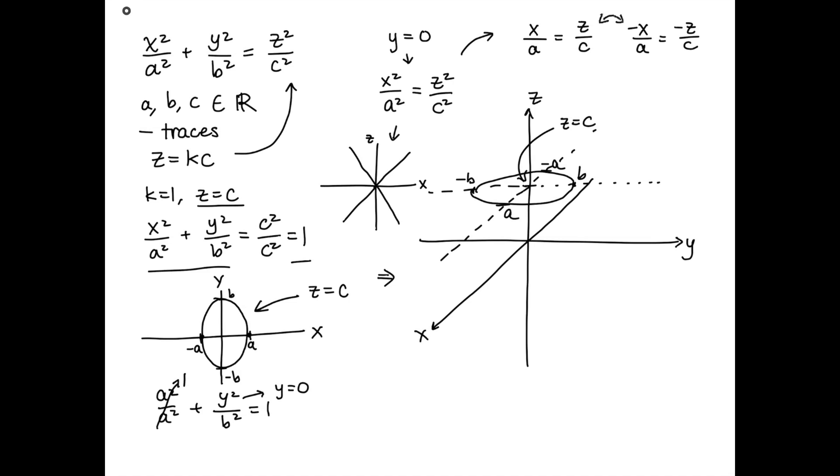So we can have x over a is equal to z over c, or negative x over a is equal to negative z over c. And these two are the same equation, but we can also get the equations negative x over a is equal to positive z over c, or x over a is equal to negative z over c.